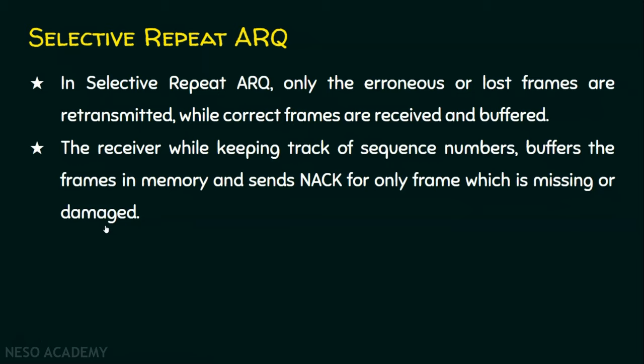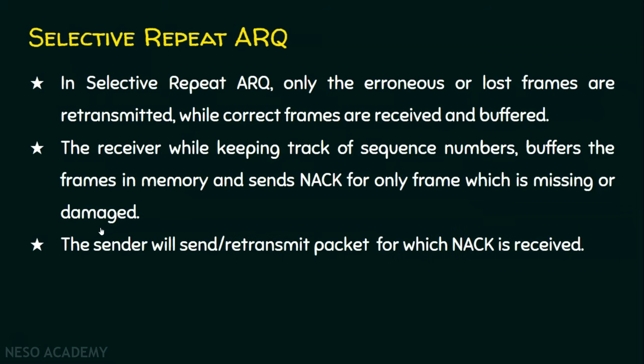If any sequence number is missing, the receiver will send either a negative acknowledgement or no acknowledgement at all, which is an indication to the sender to retransmit only that frame. Here in selective repeat, the number of retransmissions will obviously be lesser than in go-back-N ARQ, because only lost or erroneous frames are retransmitted. The sender retransmits only the packets for which a negative acknowledgement is received. Let's see it with an animation now.